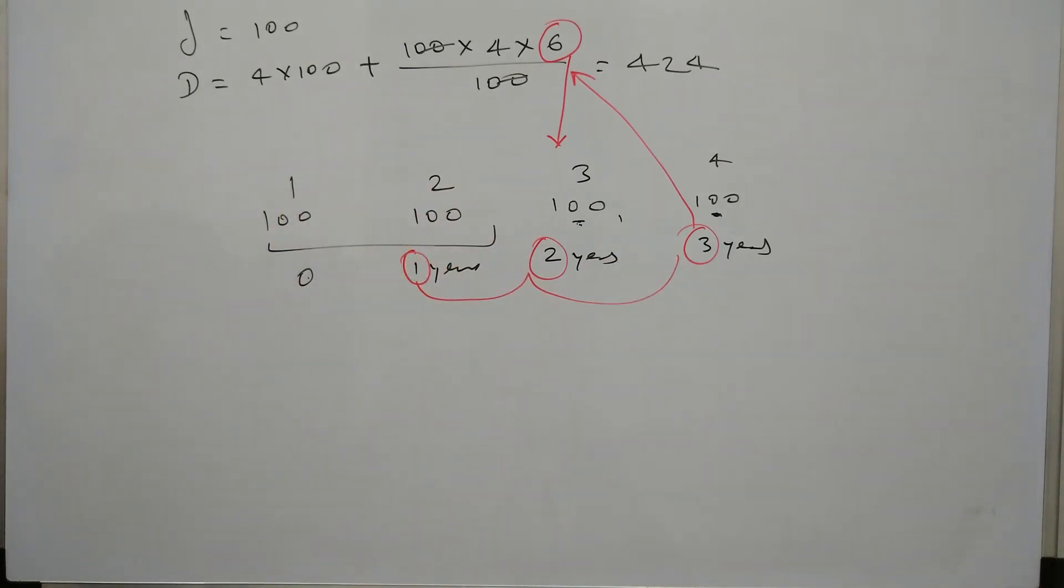And in exam you don't have to do this. Whatever is the number of years or number of months given, we can simply do n into n minus 1 by 2, which is sum of natural numbers. So here because the year is 4, our last term is 3. So if we do 3 × 4 by 2, we get the number that we can use here.